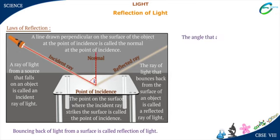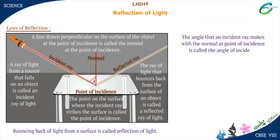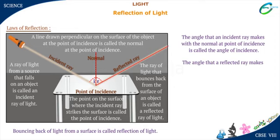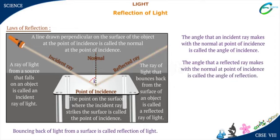The angle that an incident ray makes with the normal at the point of incidence is called the angle of incidence, usually denoted by angle I. The angle that a reflected ray makes with the normal at the point of incidence is called the angle of reflection, usually denoted by angle R.